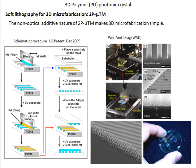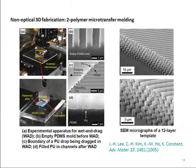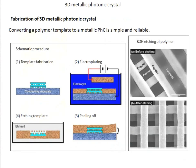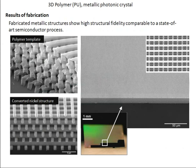Here is an example of a 12-layer sample, and you can see the close-up. After you've got the polymer, it can serve as a kind of template where you can grow other materials through it. From one polymer template you can get structures of different materials. For example, you can put a conducting substrate and do electroplating — the metal grows through the template. In the end, you peel off the metal and etch away the polymer, and you have a metallic photonic crystal with a pretty wide area and very good structural order.